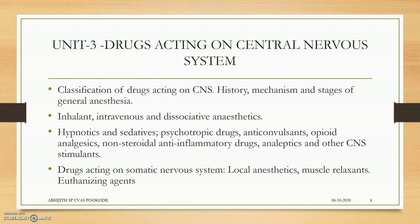Unit 3 covers drugs acting on the Central Nervous System. We study classification of CNS drugs and neuro-humoral transmission in the CNS. We deal with anesthesia — including history, mechanism, and stages of general anesthesia — local anesthesia, general anesthetics, local anesthetics, and dissociative anesthetics, including inhalant and intravenous forms. We also cover hypnotics, sedatives, anxiolytics, psychotropic drugs, anticonvulsants, opioid analgesics, NSAIDs, analeptics, antidepressants, antiepileptics, and antipsychotics used in darting and sedation.